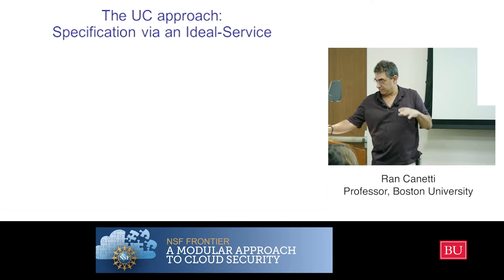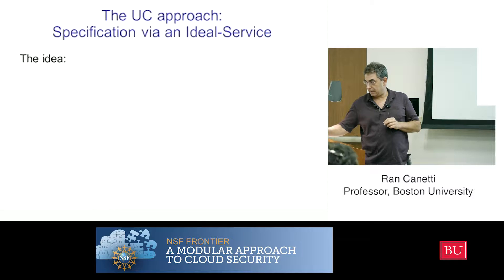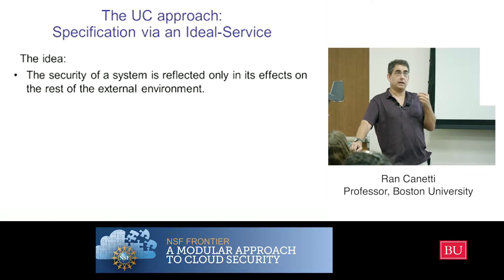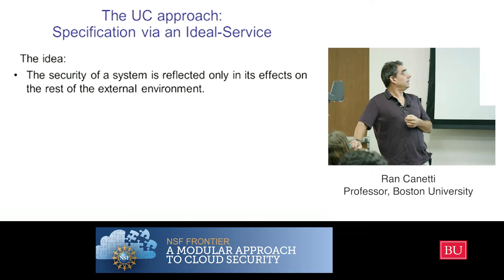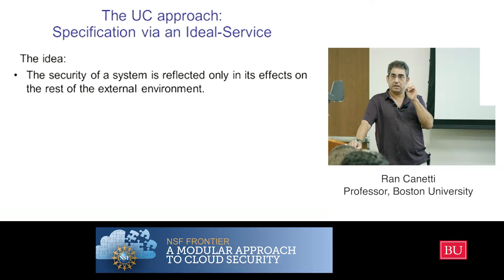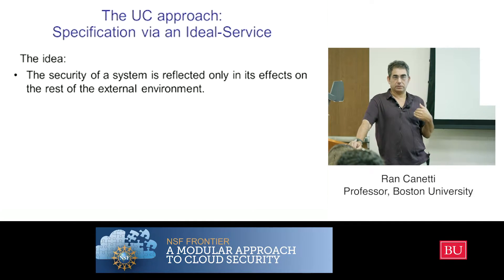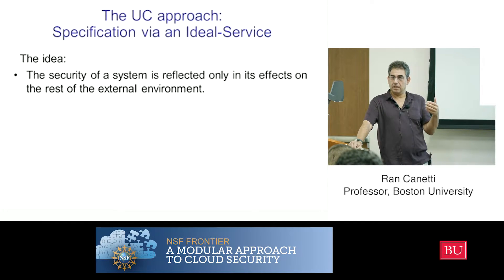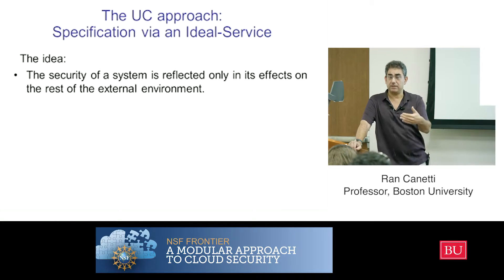So that's kind of step number one, which is maybe different than other things. The way you want to specify your security properties is that you're going to write algorithmically a service — the ideal service. This is what you would like your protocol, your system to look like. And then you're going to say that your system is secure if it looks like this ideal service. The whole point of this ideal service is to see how it looks from the outside world — how the environment looks at it and sees its interaction with that service. That's the way we specify the security of the system: by how it looks to the outside.